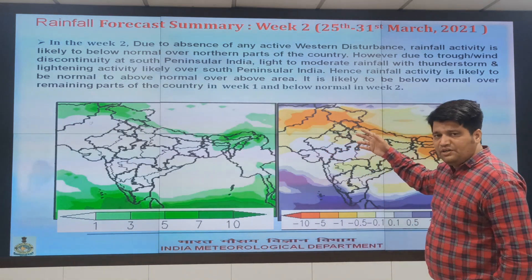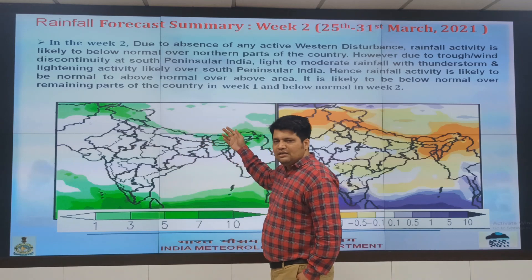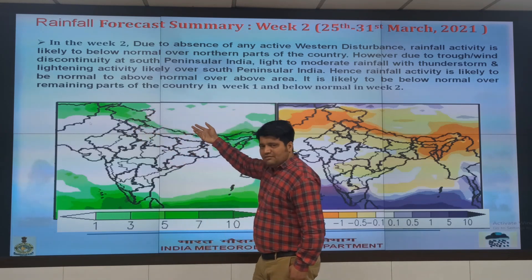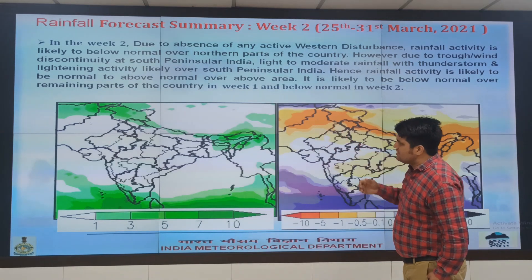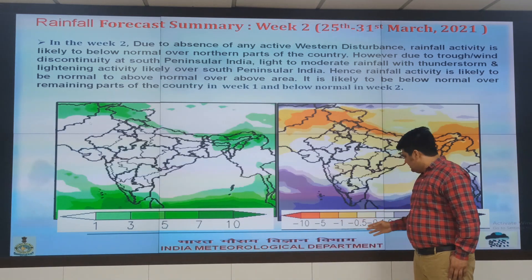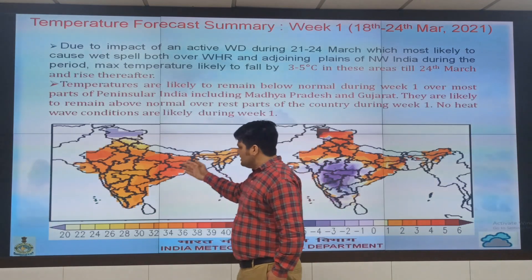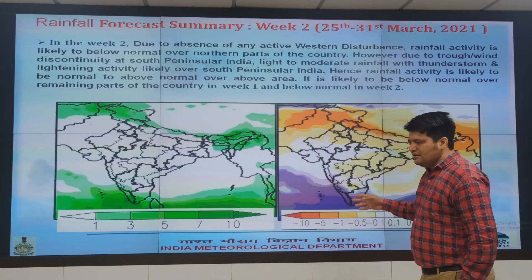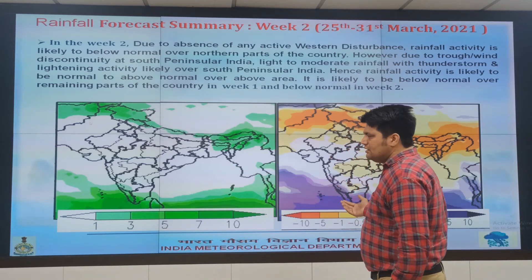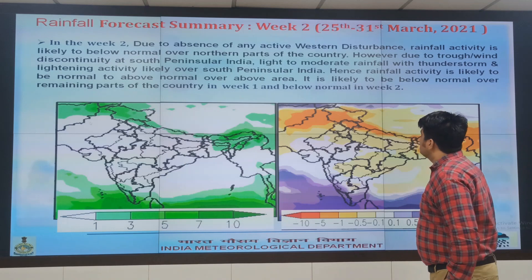This is the rainfall summary for Week 2. There is no active Western disturbance approaching the Indian region in Week 2. Although feeble western disturbances will approach and impact the western Himalayan region, the rainfall anomaly will be negative — going towards yellow and red colours, not blue. However, the southern parts of Kerala and Tamil Nadu, due to lower level easterly speed convergence, are very likely to have isolated to scattered rainfall activity, which will result in above-normal rainfall over the southern peninsular region.